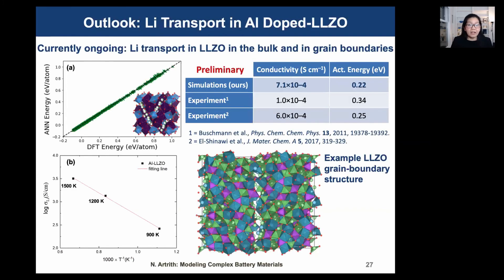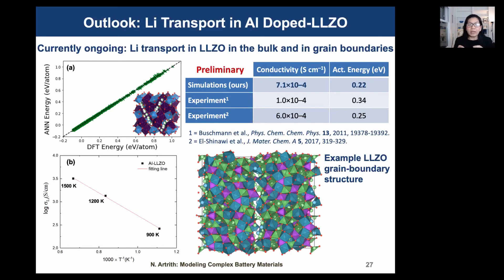As an outlook, we are also interested in another type of solid electrolyte. We use the same machine learning model to investigate LLZO, another promising solid electrolyte for solid-state batteries. We are currently working on understanding lithium transport in LLZO grain boundaries. It is technically challenging to distinguish between bulk and grain boundary transport in experiments, and we want to know what grain size would be optimal. Our LLZO machine learning potential model can already be used for bulk simulations, but these results are still preliminary.